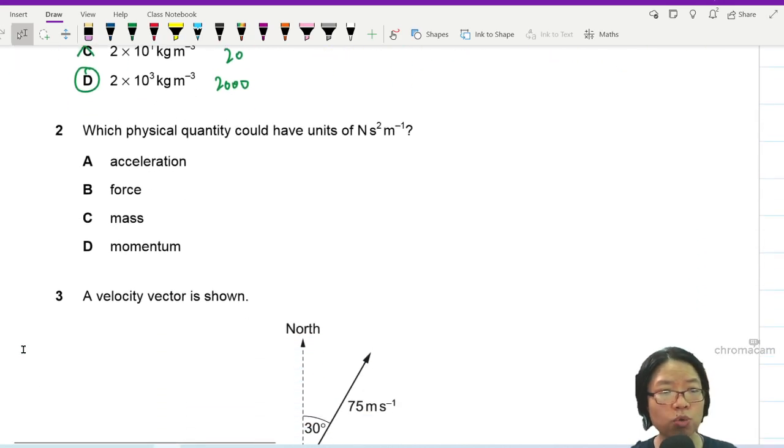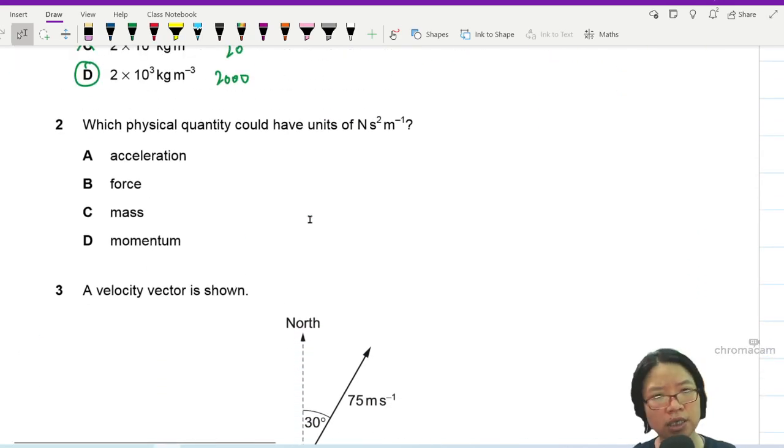Question 2, which physical quantity could have the units of Newton, second square, meter, negative 1?